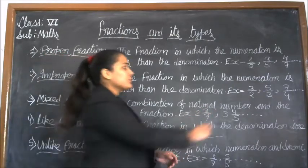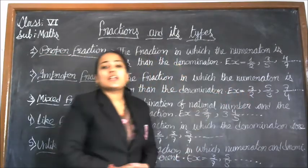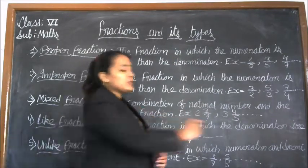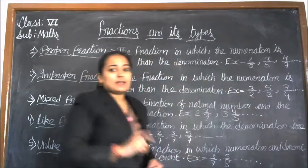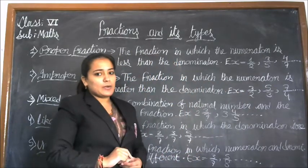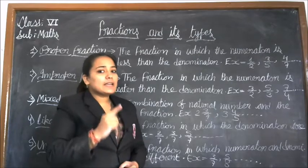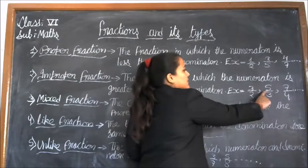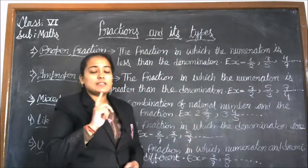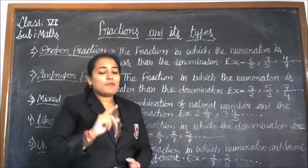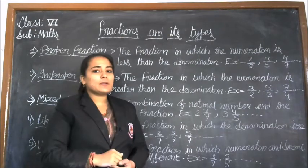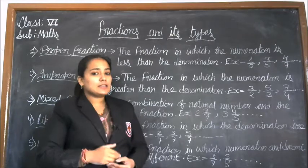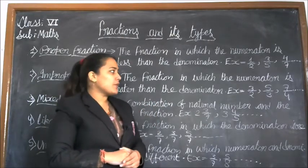For example, 3 upon 2: here 3 is the numerator and 2 is the denominator, and 3 is greater than 2. Therefore it is an improper fraction. Next, 5 upon 3: 5 is the numerator, 3 is the denominator, and 5 is greater than 3. Therefore it is an improper fraction.